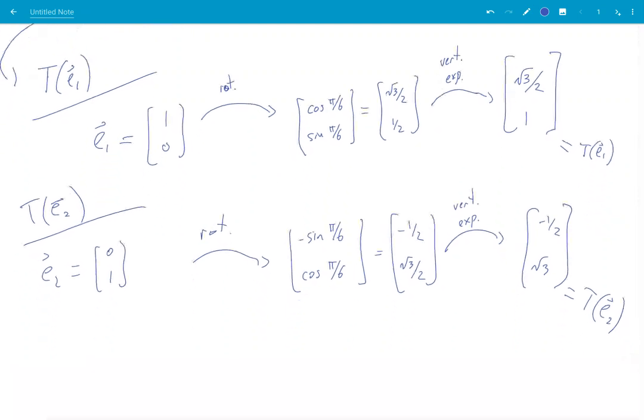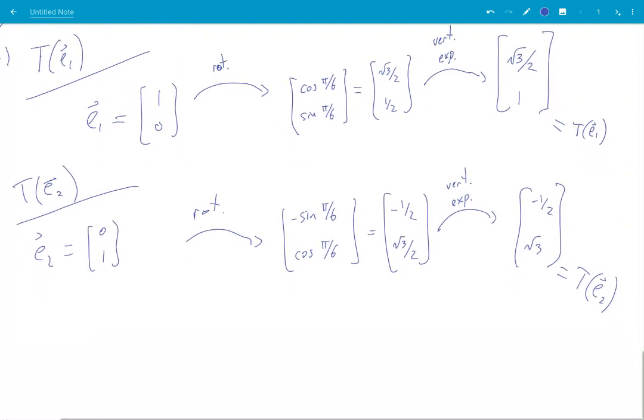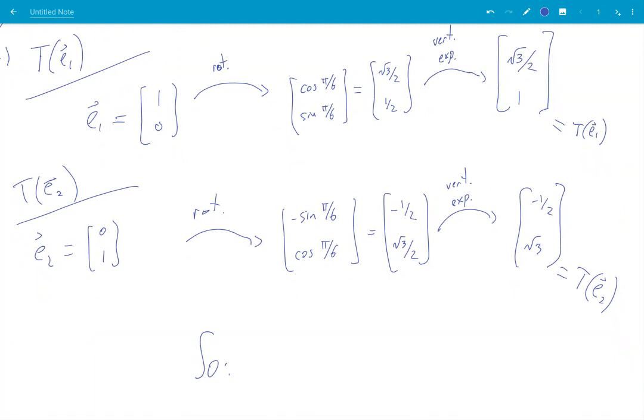So, my matrix A is just taking my two results here and putting them into a matrix. Root 3 over 2, 1. First column. Obtained from here. And minus a half, root 3, obtained from here.